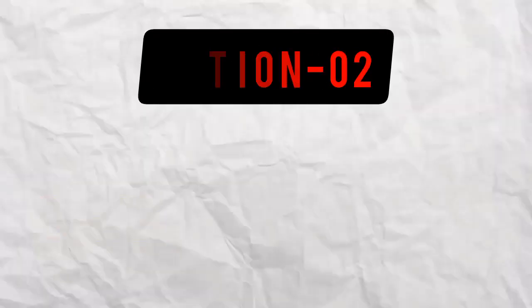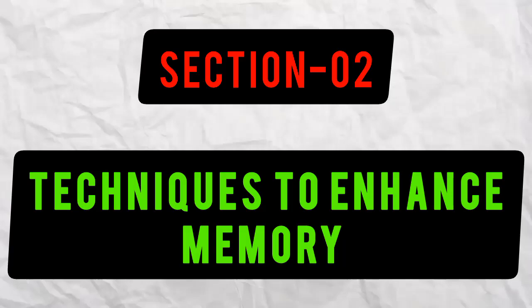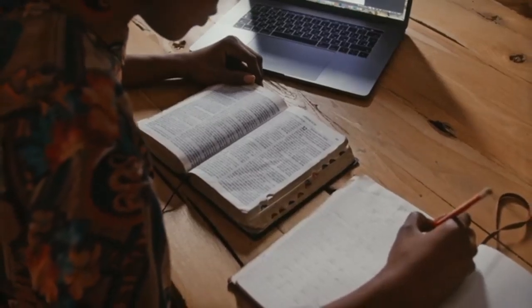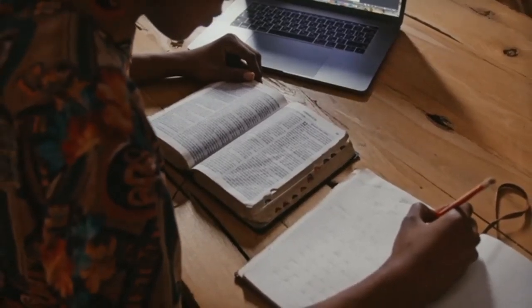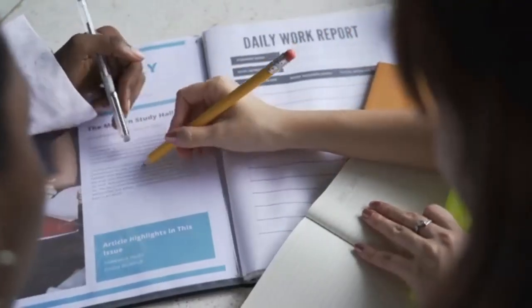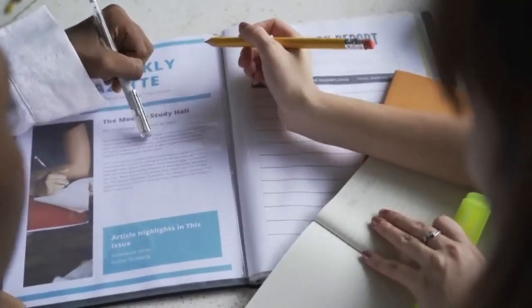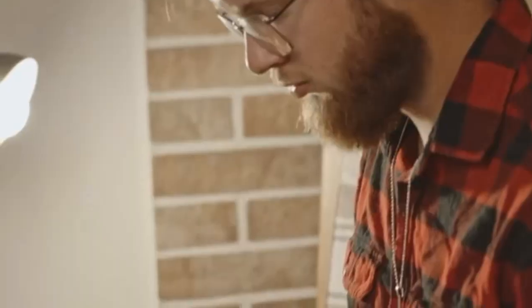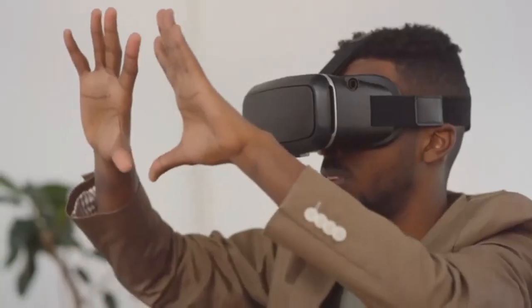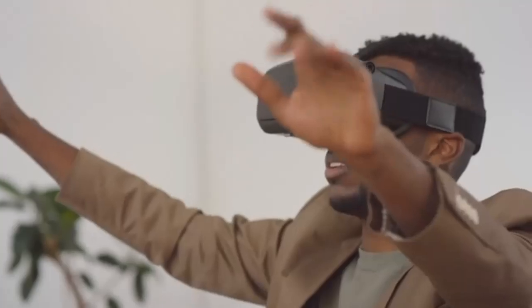Section two: techniques to enhance memory. Number one, active learning. Instead of passively reading or listening, engage actively with the material. Summarize key points in your own words, teach others what you've learned, or make connections to real-life examples. For instance, if you're learning about historical events, imagine yourself in that era. This creates vivid memories that stick.